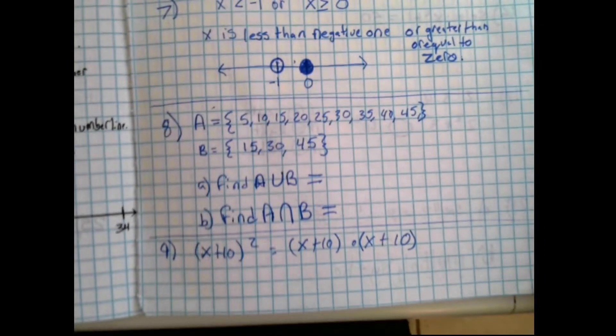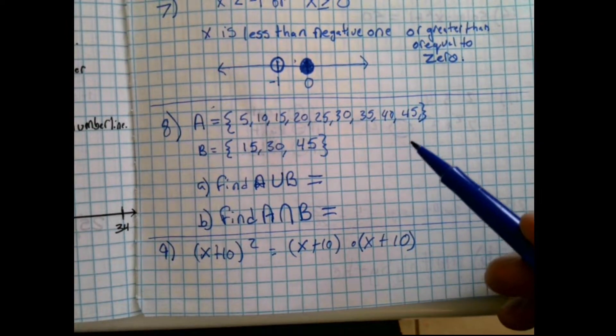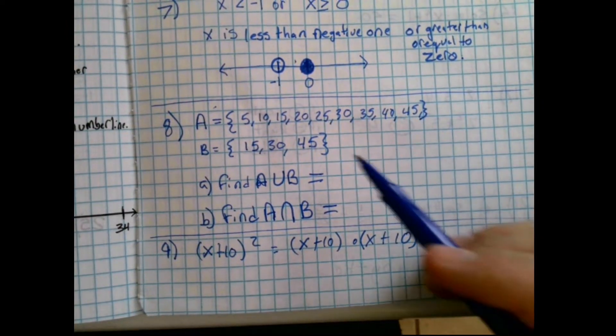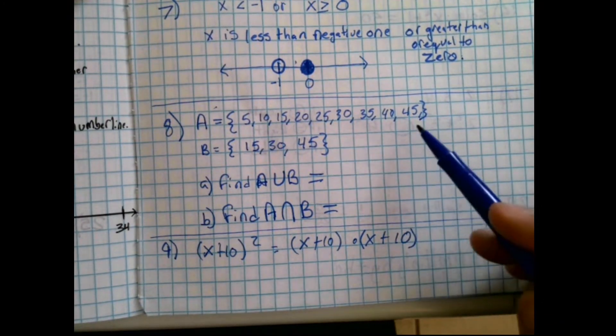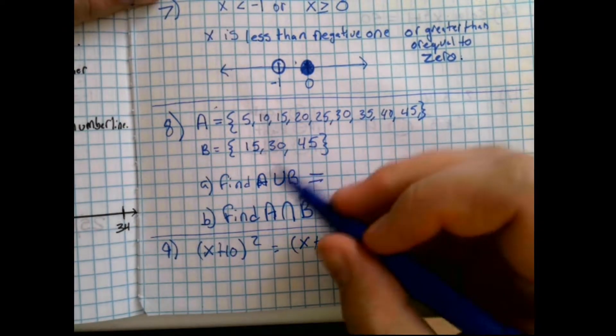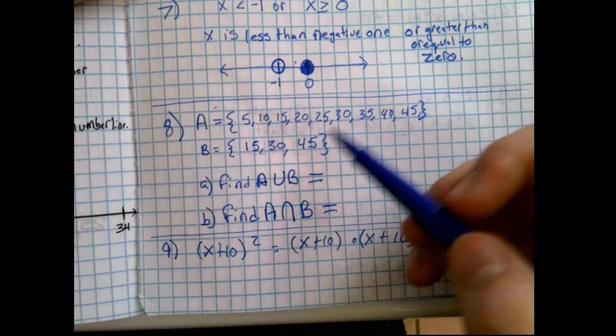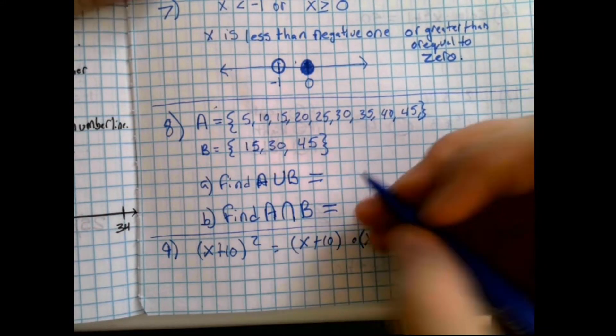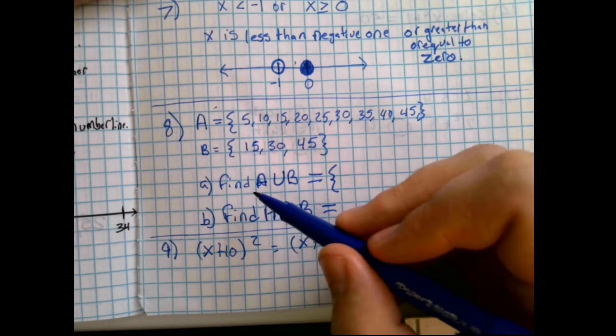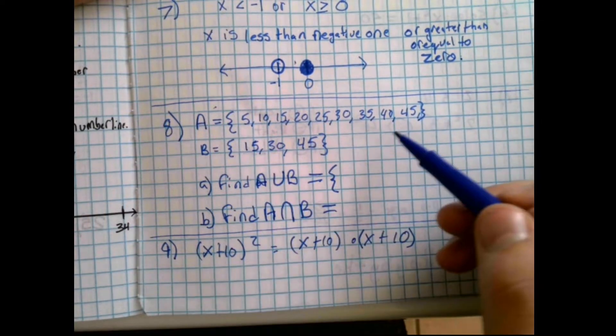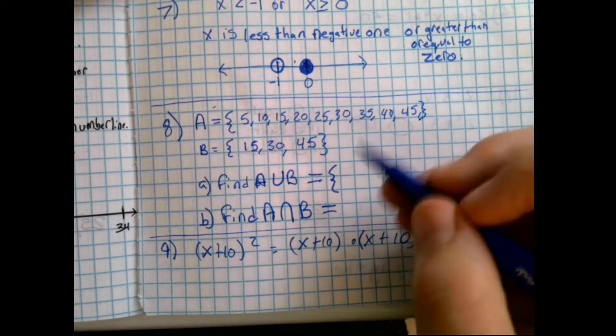Question 8 is a set question. Set A is the set of multiples of 5 that are less than 50. Set B is the set of multiples of 15 that are less than 50. Now, to find A union B, I want to point out that 15 is in both, 30 is in both, 45 is in both, so this is going to be identical to set A. Because the things that are in A, or B, or both, is everything in A. There's nothing in B that isn't in A. B is a subset of A.